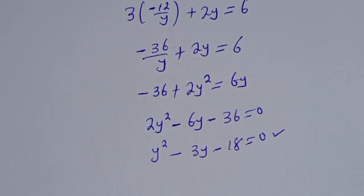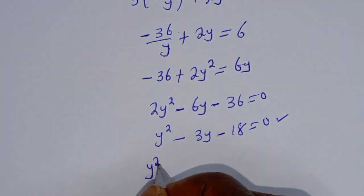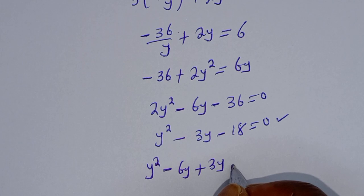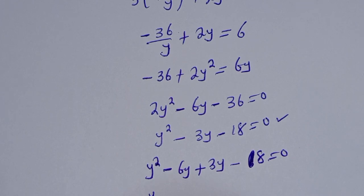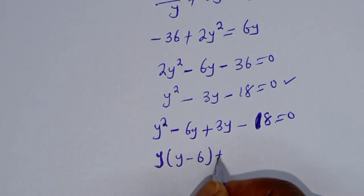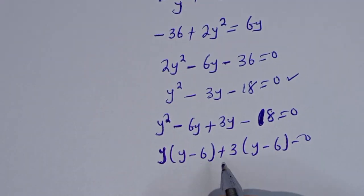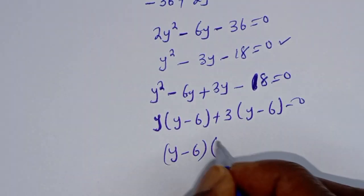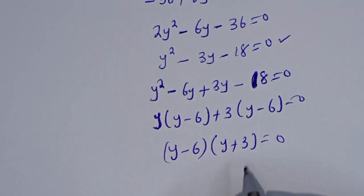This is a quadratic equation. Let's solve it using the factorization method. This is y² - 6y + 3y - 18 = 0, which factors as y(y - 6) + 3(y - 6) = 0.